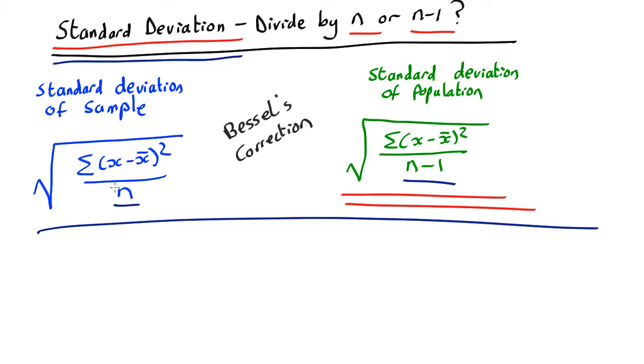What is the difference? Well, typically when you measure the standard deviation, you're trying to measure something about the world. For example, what's the uncertainty in this measurement? What's the range of speeds?